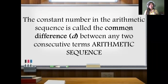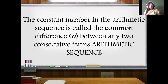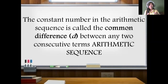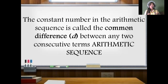The constant number in an arithmetic sequence is called the common difference, symbolized by D, between any two consecutive terms. When we say common difference, in every three consecutive terms their middle term must share the same common difference. You cannot call it an arithmetic sequence if the common differences are not equal — that is just a sequence but not an arithmetic sequence. The common difference must be the same from the first term to the last term.